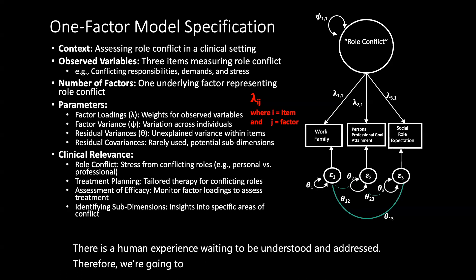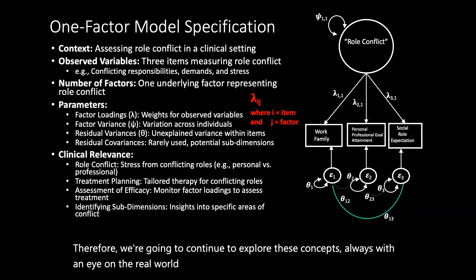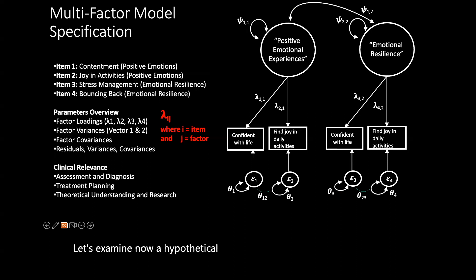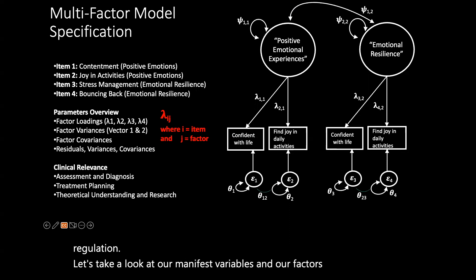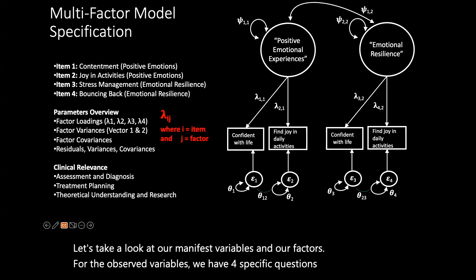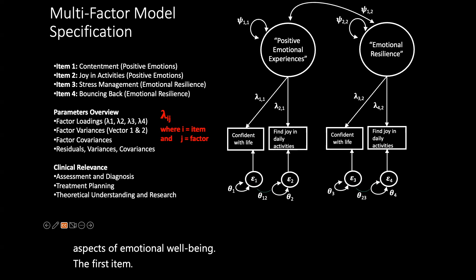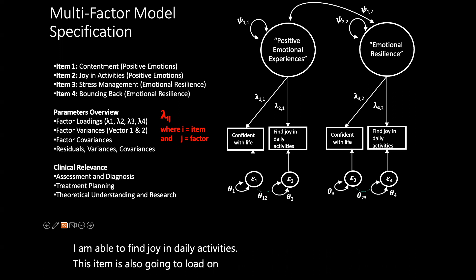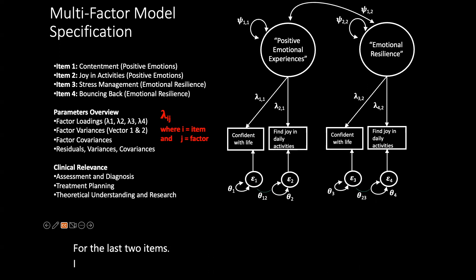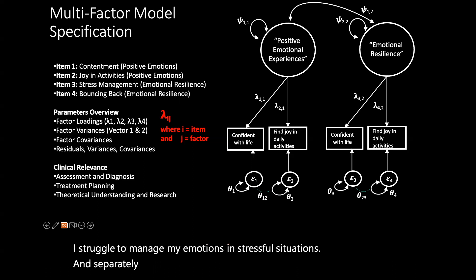Let's examine a hypothetical multi-factor example related to emotional well-being, specifically focusing on assessing positive emotional experiences and emotional resilience/regulation. For the observed variables, we have four specific questions. The first item, 'I often feel content with my life,' loads on positive emotional experiences. 'I am able to find joy in daily activities' also loads on positive emotional experiences. For the last two items: 'I struggle to manage my emotions in stressful situations' and 'I can bounce back after a personal setback' — these two items load on emotional resilience/regulation.